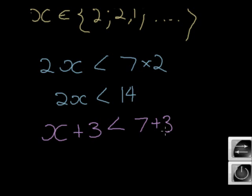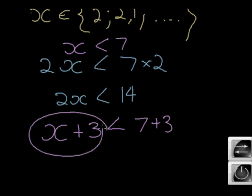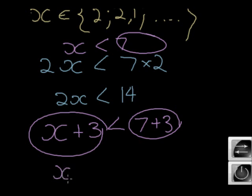So remember what I had initially. Initially, I had that x is less than 7. So if I add a 3 on the left-hand side, I must also add a 3 on the right-hand side. You see? So plus 3 here, plus 3 there. So that means that if I added a 3, it would be less than 10.